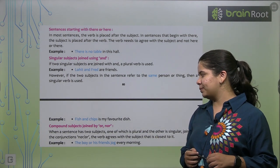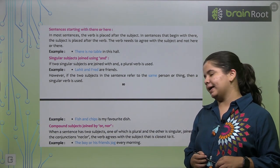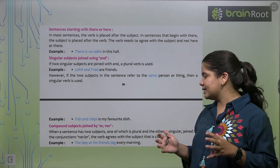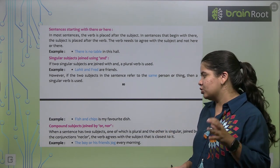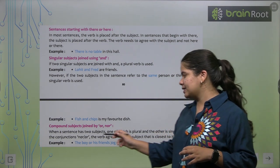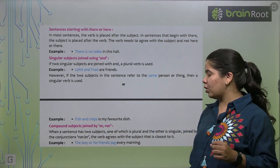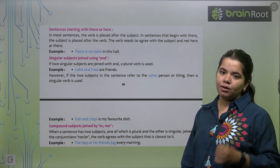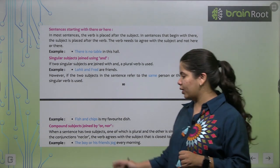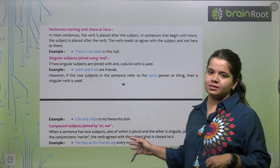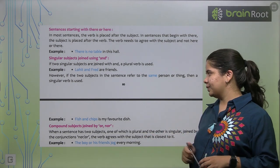Compound subjects joined by or nor. Jo humare kaise type ki subjects hota hai? Jaise, the boy, his friends. The boy or his friends jog every morning. Toh, aap dekh sakte hai.